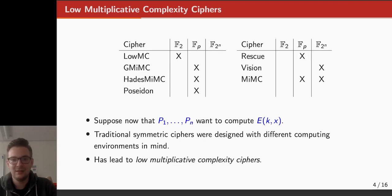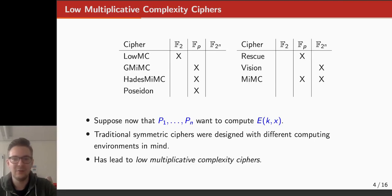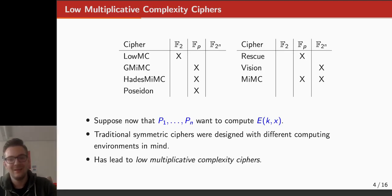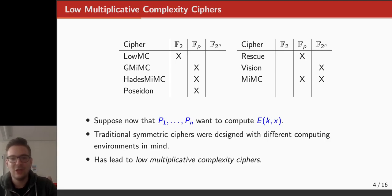In the tables shown here, you see a number of such ciphers — I don't claim this is an exhaustive list, but it gives an idea of what people have been doing. What these ciphers differ in is that some are defined over bits, whereas others are defined over prime fields, others over binary fields, and some over both. Because this field is relatively new, designs are not as well understood as traditional designs, and some of these ciphers have been broken.